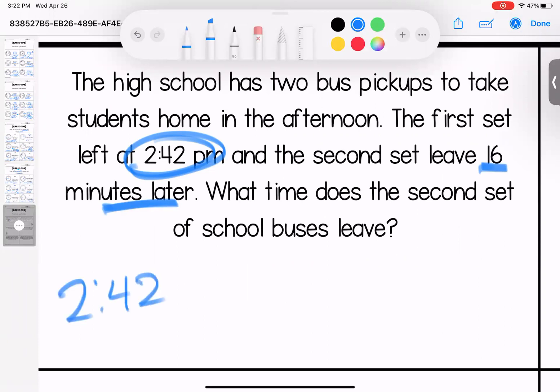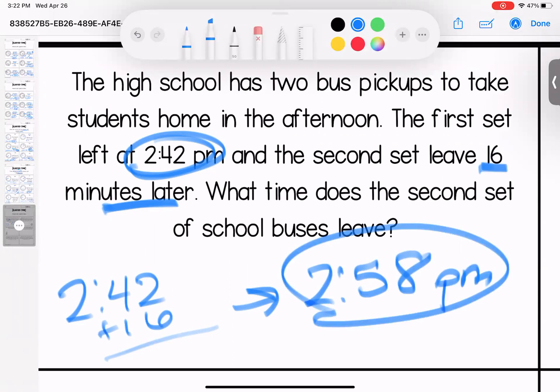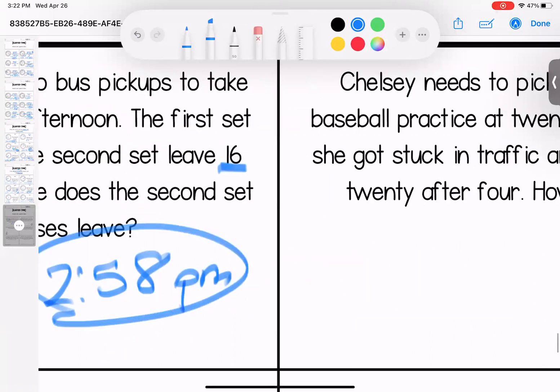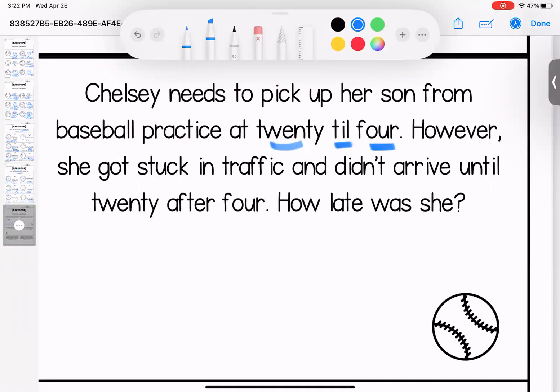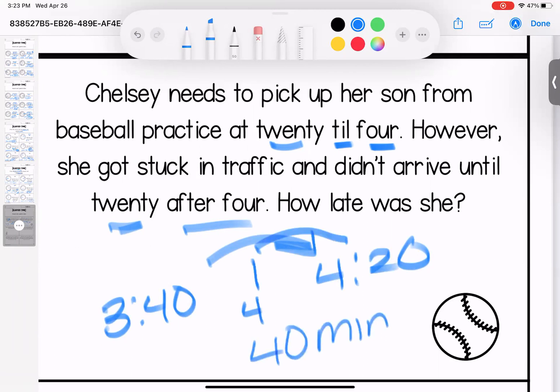Chelsea needs to pick up her son from baseball practice at 20 till four. However, she got stuck in traffic and didn't arrive until 20 after four. How late was she? 20 minutes before four is 3:40, 20 minutes after four is 4:20. It's 20 minutes until four, 20 minutes until 4:20, so 40 minutes late.